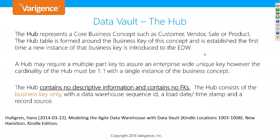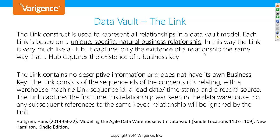The Data Vault is made up of three core concepts. The first is the hub, which represents a core business concept. It has no descriptive information and no foreign keys — it is really just a place where you put your business key from the source system to identify your entity. The next is the link, which is really the glue of the whole system. The link contains no descriptive information and has no business key of its own — it only contains foreign keys to hubs.